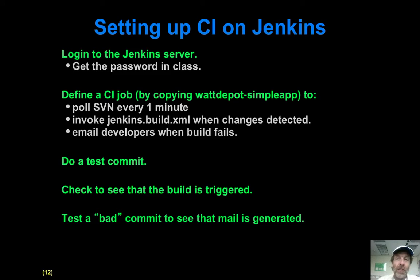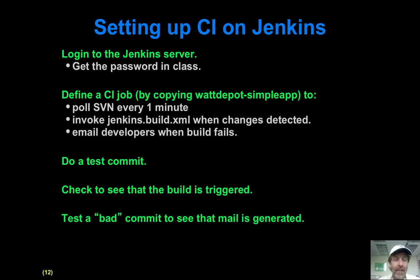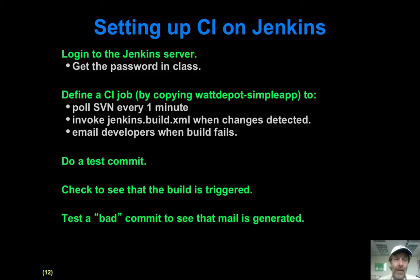Setting up continuous integration: you've got to log in to the Jenkins server — I'll give you the password in class. You define a continuous integration job for your project, and the easiest way to do it is to simply copy the Watt Depot Simple App job which I've got set up. Then you want to do a test commit to see that everything works fine — run verify when you make a change — and it's important to make sure that the build is triggered within a minute. It's also important to check what happens when you make a change that actually breaks the system, so you can verify that the appropriate things happen.